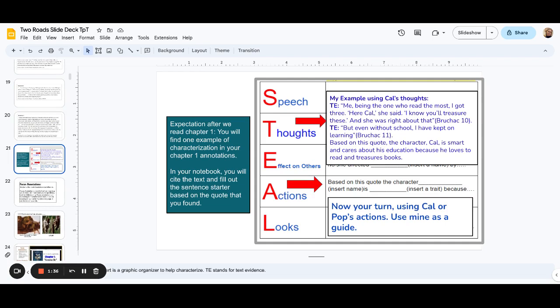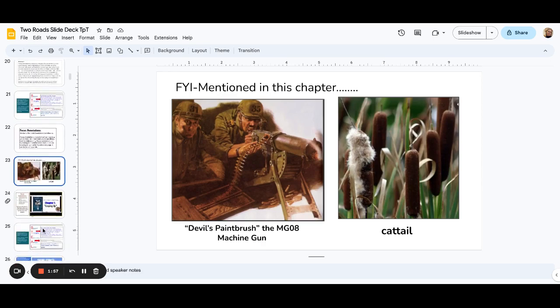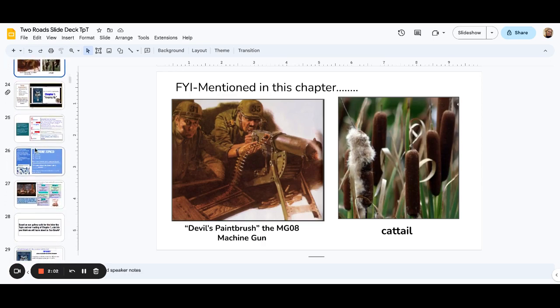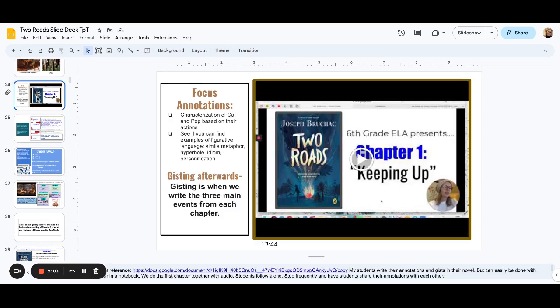Then we start with a STEEL chart. A STEEL chart is just a graphic organizer for how to characterize. And so this is setting the expectation for what they're going to do with chapter one. So I put my example of how to do it with Cal as the main character, his thoughts. And then the students are going to try doing it with what they see Cal's actions are in the first chapter. Here's some building background for things that they don't know, like devil's paintbrush is a machine gun during World War I.